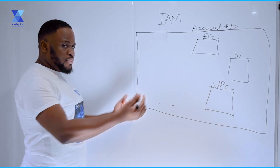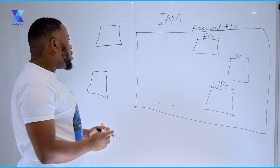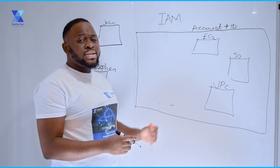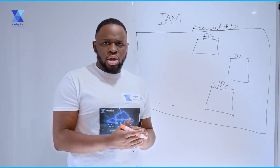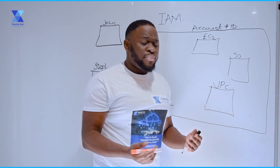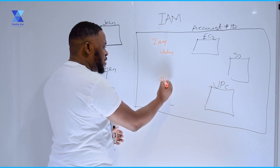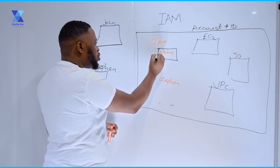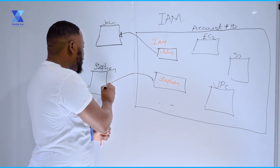As part of your setup, you might have different engineers making use of the AWS account — engineers like John and Stephen. You want these engineers to access the AWS account and carry out their job functions. That is not possible without AWS IAM. So with AWS IAM, what you want to do is create IAM users — for example, an IAM user called John and an IAM user called Stephen — and give each engineer their respective IAM user credentials to log in.